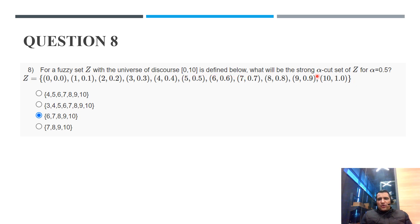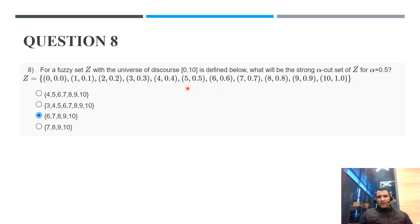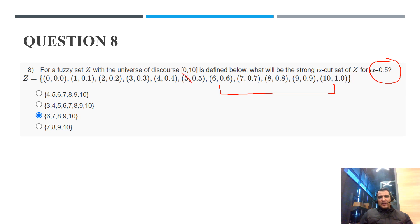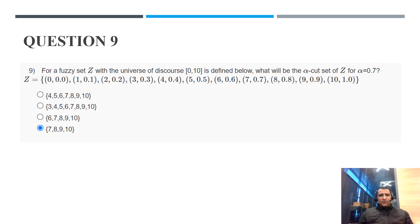Question 8: For fuzzy set Z with universe of discourse 0 to 10, what is the strong alpha cut set at alpha = 0.5? Since it is a strong alpha cut, we exclude element 5 with membership value 0.5. The correct answer is {6, 7, 8, 9, 10}, which is option C.